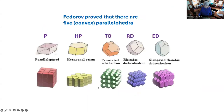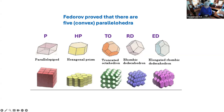Fedorov proved that there are only five topological shapes that do work as parallelohedra: the parallelepiped, the hexagonal prism, the truncated octahedron, the rhombic dodecahedron, and the elongated rhombic dodecahedron. This last one you can get from the rhombic dodecahedron by taking a sequence of vertices and stretching them out. He discovered the elongated rhombic dodecahedron himself; the others had been known before.